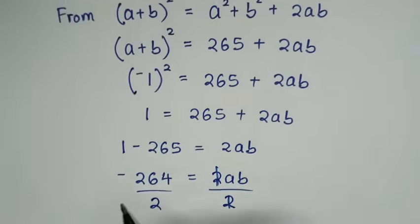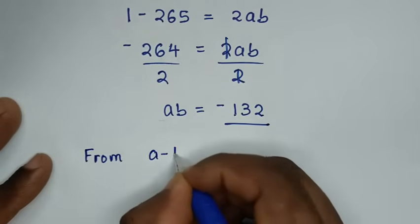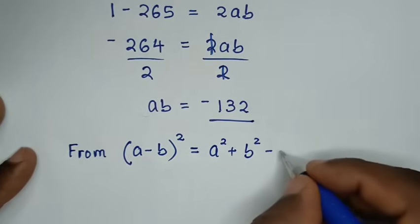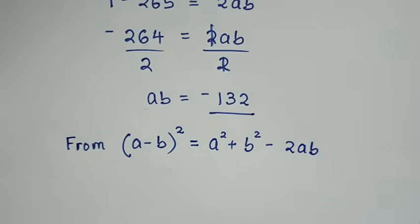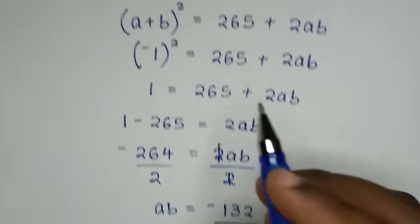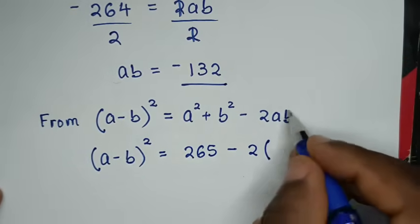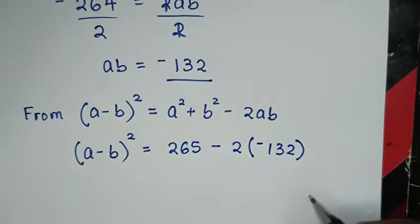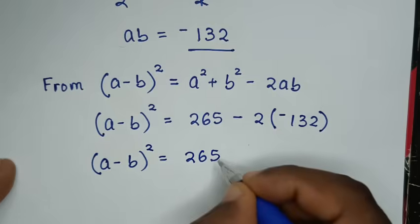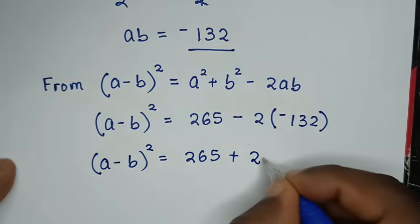In the next step, we use the expansion of (a minus b) squared, which equals a squared plus b squared minus 2ab. So (a minus b) squared equals 265 minus 2 times negative 132, which gives 265 plus 264.